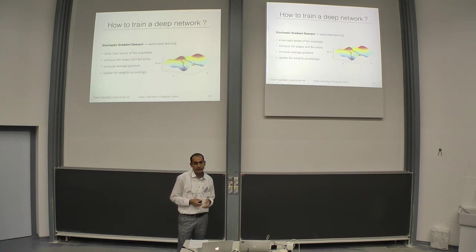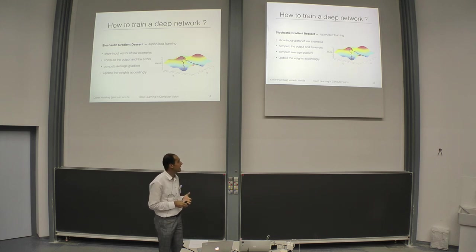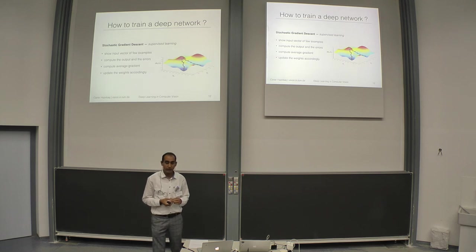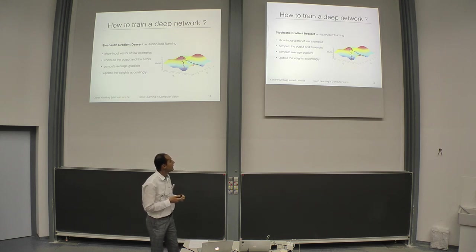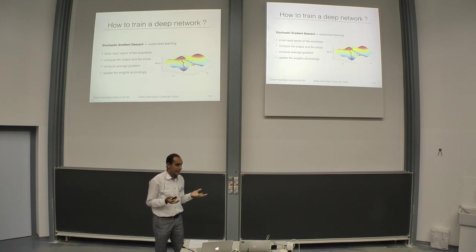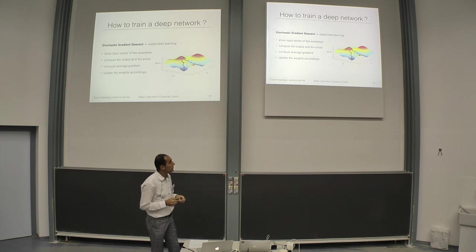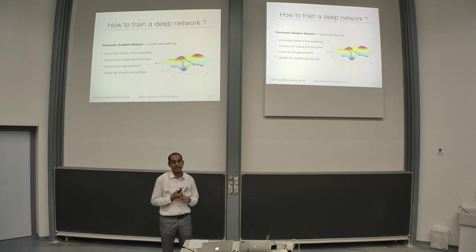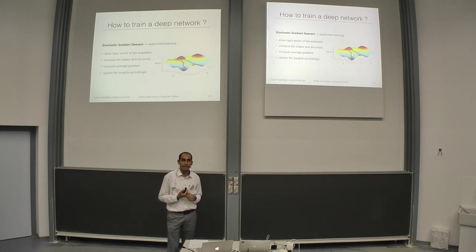How do we actually train a network for supervised methods? Most researchers use stochastic gradient descent. The idea is simple: you have ground truth labels and data, you input a few examples into the network, the network estimates an output, you compute the error, and then you update the weights in the network using the average gradient. At the end, what you expect is to reach the global minimum. The problem in deep learning is that the energy function is not convex — it's non-convex, which means there is no guarantee you can reach the global minimum. This is the non-unique solution problem.